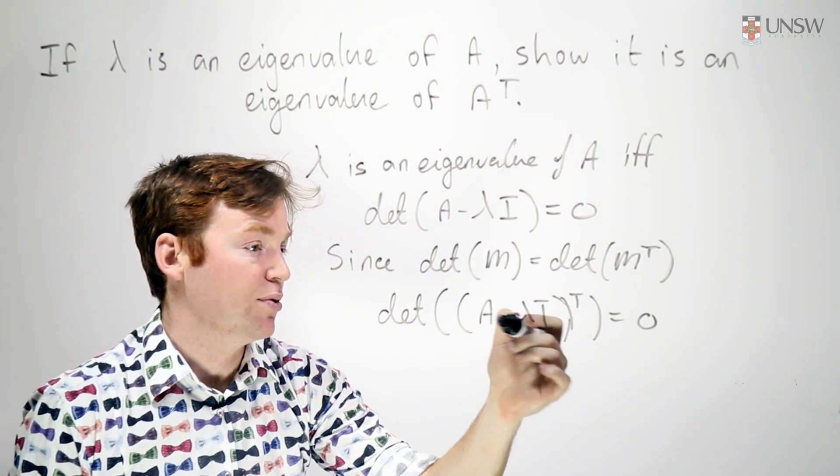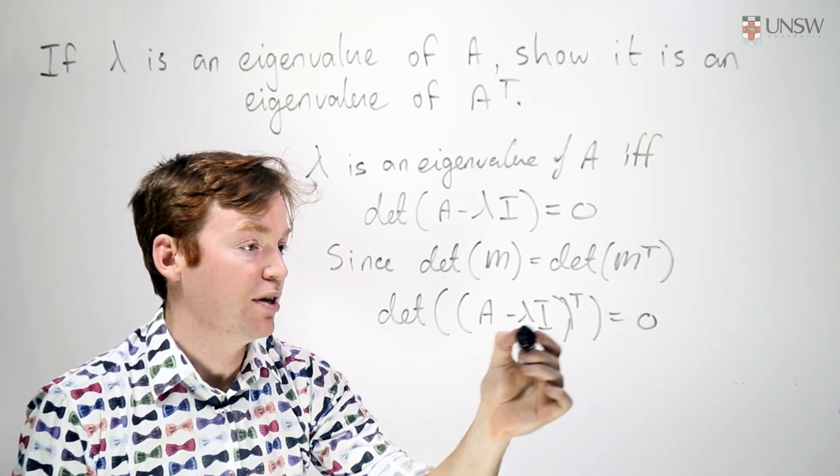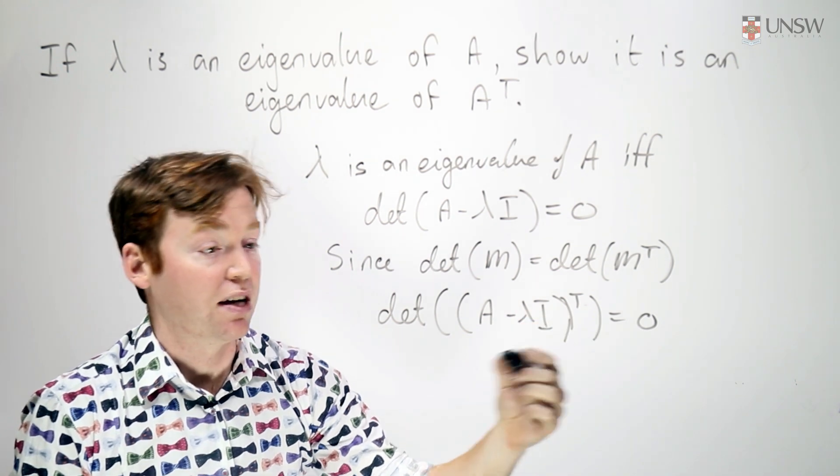And now I can bring the transpose inside these brackets. This becomes A transpose and the transpose of lambda I is still lambda I.